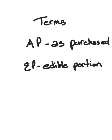AP is as purchased — it's the product as it comes from the vendor. EP is edible portion, and it is what's left over after you've processed.